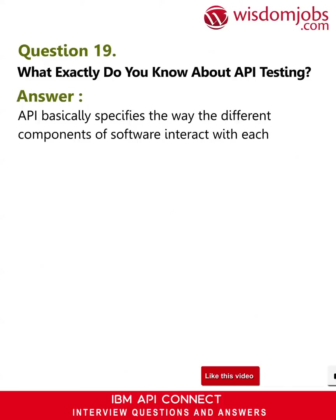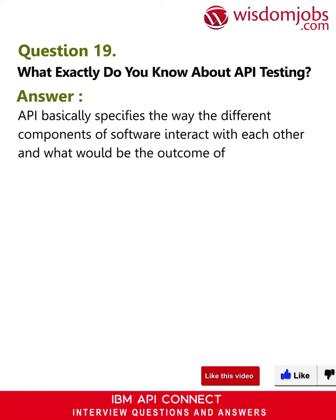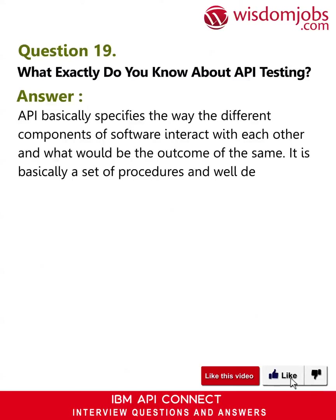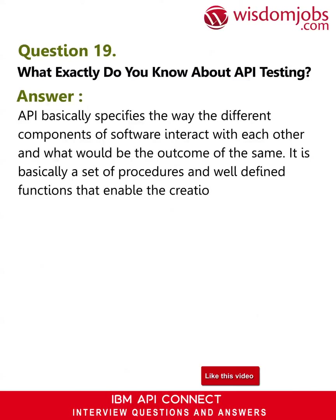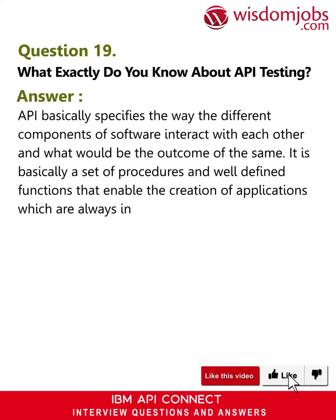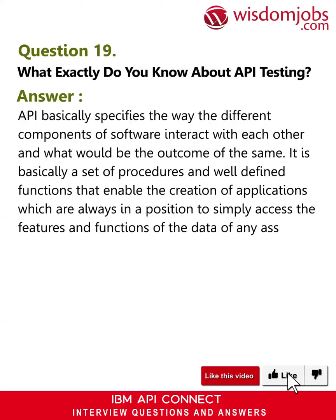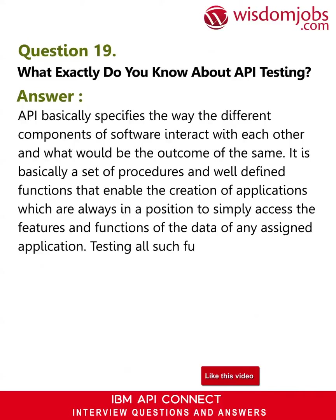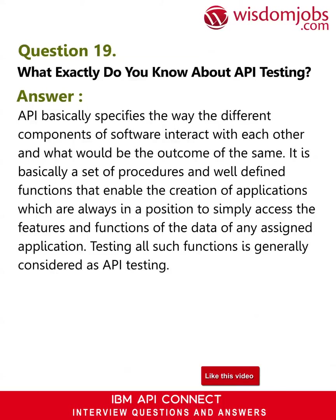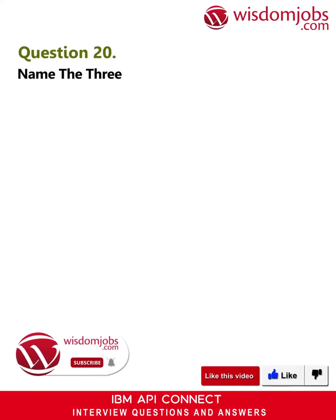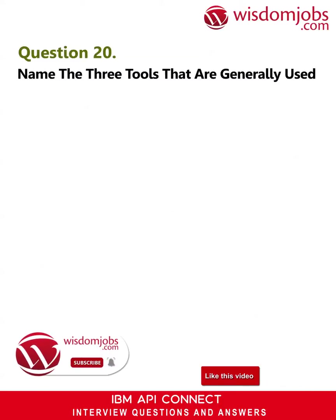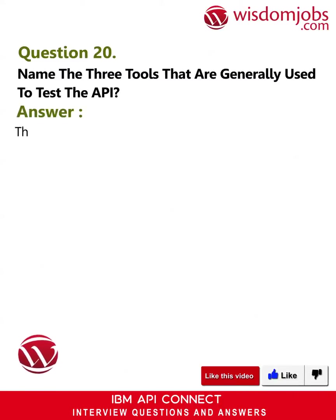Question 19: What exactly do you know about API testing? Answer: An API basically specifies the way the different components of software interact with each other and what the outcome would be. It is basically a set of procedures and well-defined functions that enable the creation of applications which can access the features and functions of the data of any assigned application. Testing all such functions is generally considered as API testing.